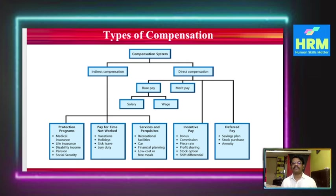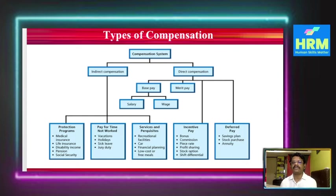Looking at the types of compensation, there are two main categories: direct compensation and indirect compensation. Under indirect compensation, we find protection programs, pay for time not worked, and services. Protection-related benefits include medical insurance, life insurance, disability coverage, pensions, and social security.